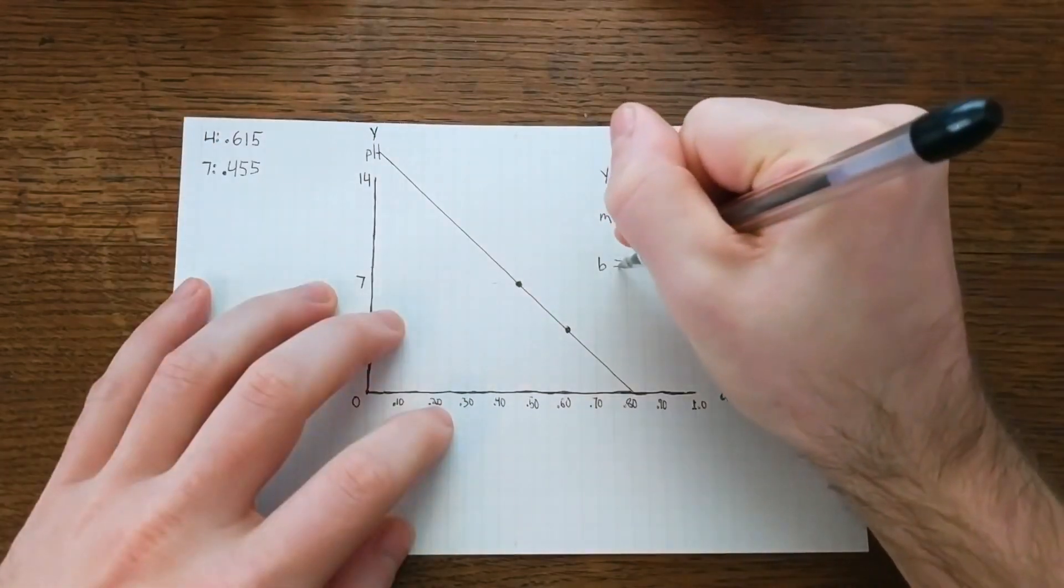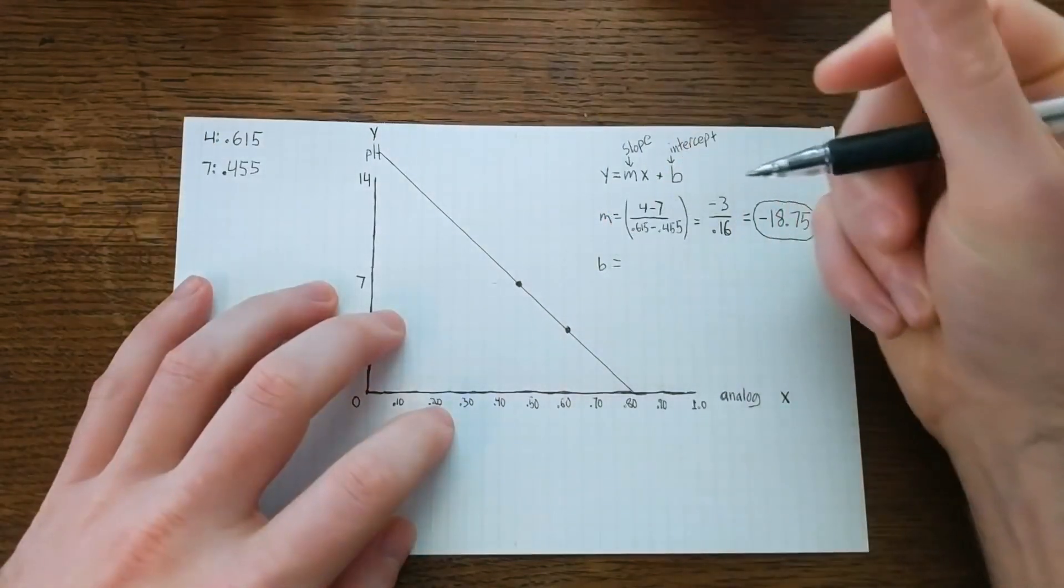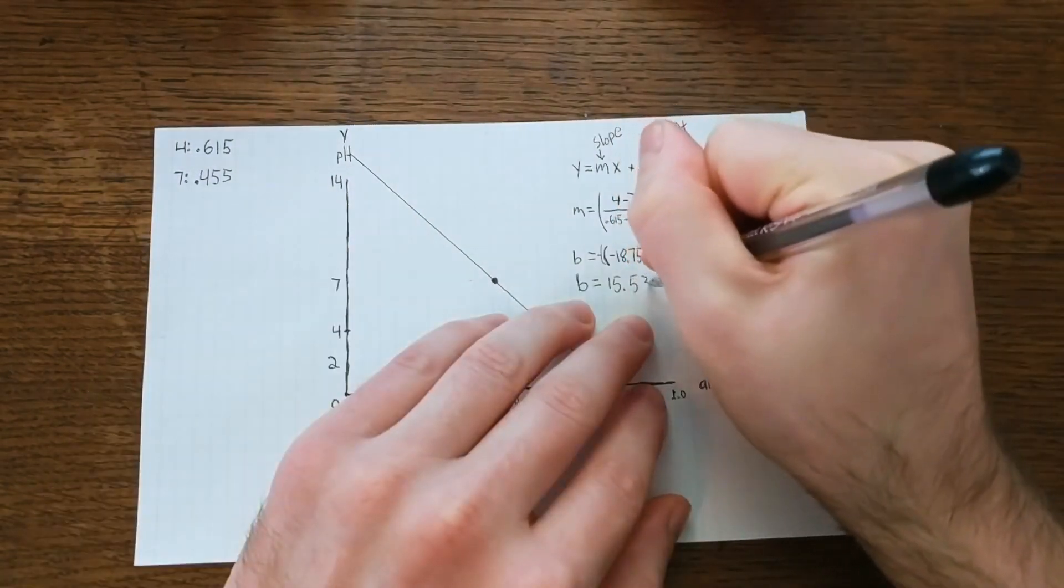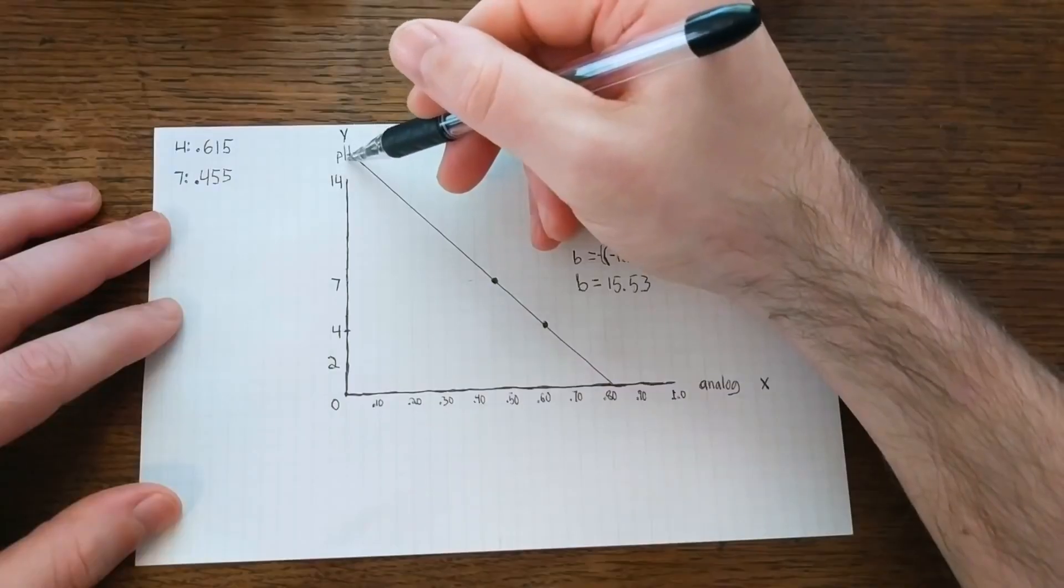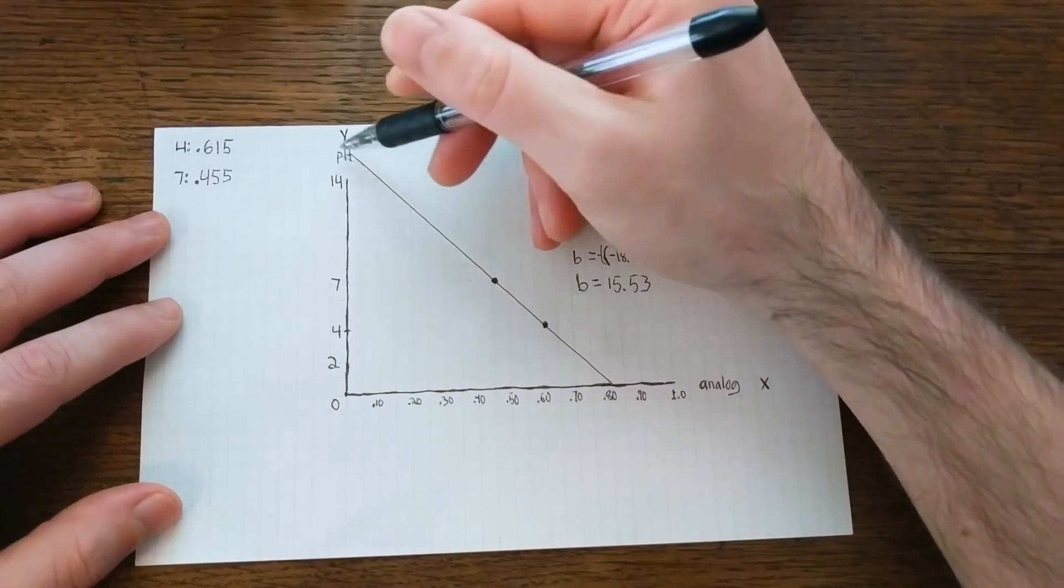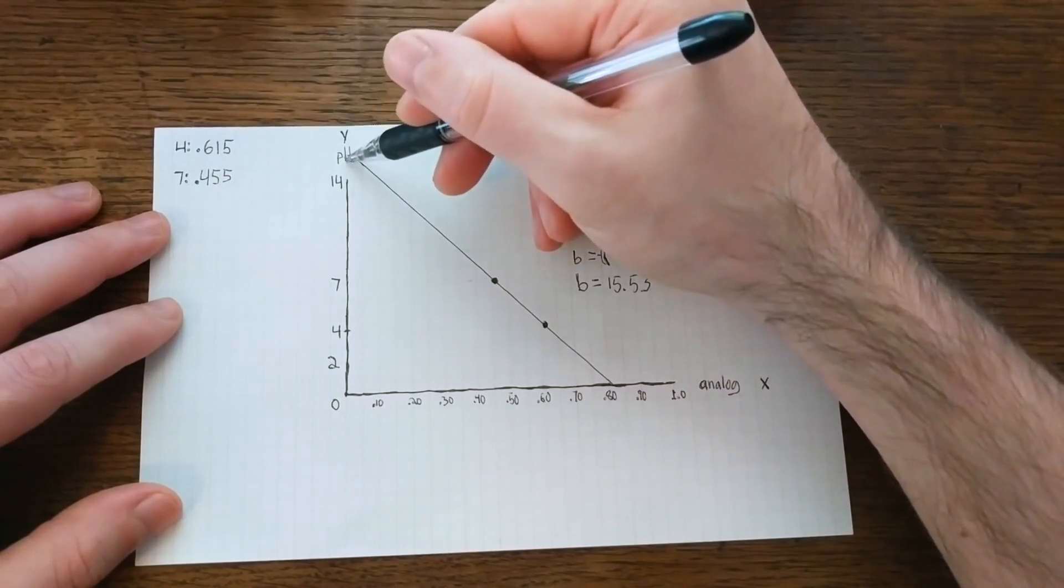And to calculate our intercept, we can just follow this back using one of our known points. And we get approximately 15.53. If you do a visual check to confirm, you can see that this is about where our line hits the y-axis. So we did everything right.